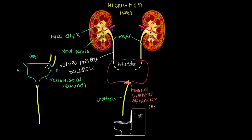Since we don't have control over the internal urethral sphincter, it is smooth muscle — involuntarily controlled. That's our internal urethral sphincter. Now, this is a good opportunity to look at a video showing how the ureters spray urine into the bladder — we call this a ureter jet, and sometimes you can see this on ultrasound.